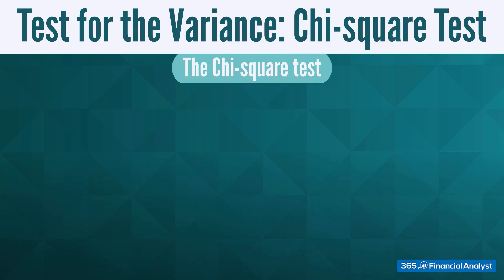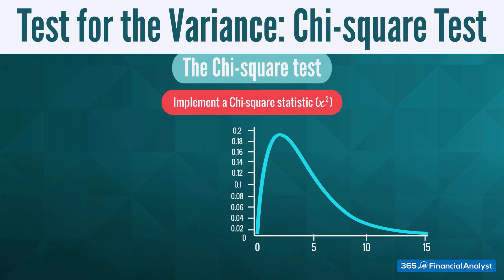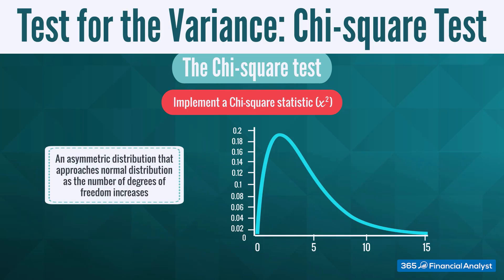The idea of the chi-square test is to implement a chi-square statistic, which is related to a distribution that is asymmetrical in nature, but approximates a normal distribution as the number of degrees of freedom increases.